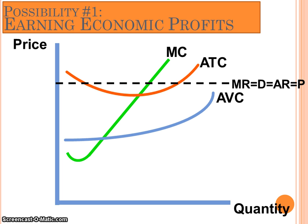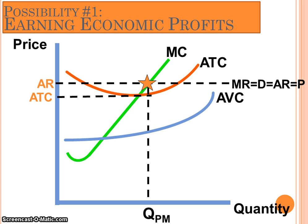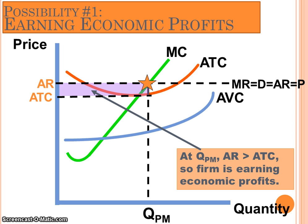To identify the profit-maximizing quantity of output, look for where marginal cost equals marginal revenue. In the workbook example, that turns out to be at about 8.5 units of output — in the real world, you'd round back to 8 because you won't produce a partial unit. We know profits are being earned here because average revenue is greater than average total cost at the profit-maximizing level of output. The light purple area on the graph shows the area of profits. This is a great situation for a producer to be in.